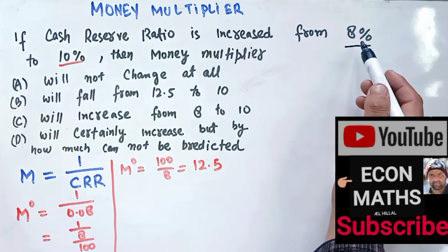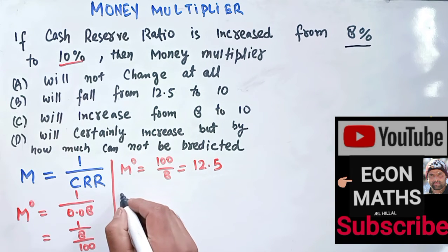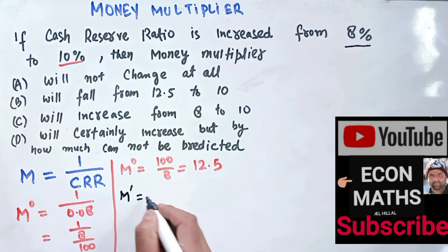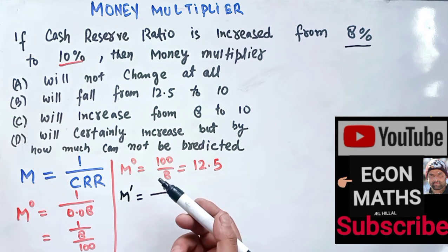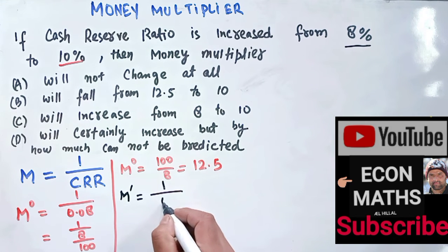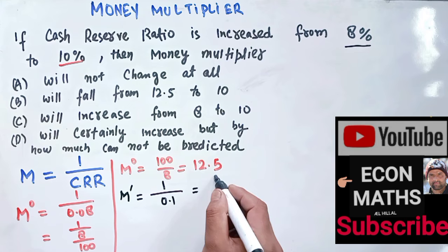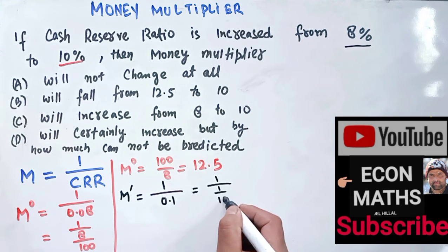Now we are being told that it has increased from 8 percent to 10 percent. Let us say M' denotes our new money multiplier, which will be equal to 1 upon the CRR. So CRR is actually 10 percent now, so it can be written as 0.1. So it is equal to 1 upon 1 upon 10. That means our new money multiplier will be equal to 10.